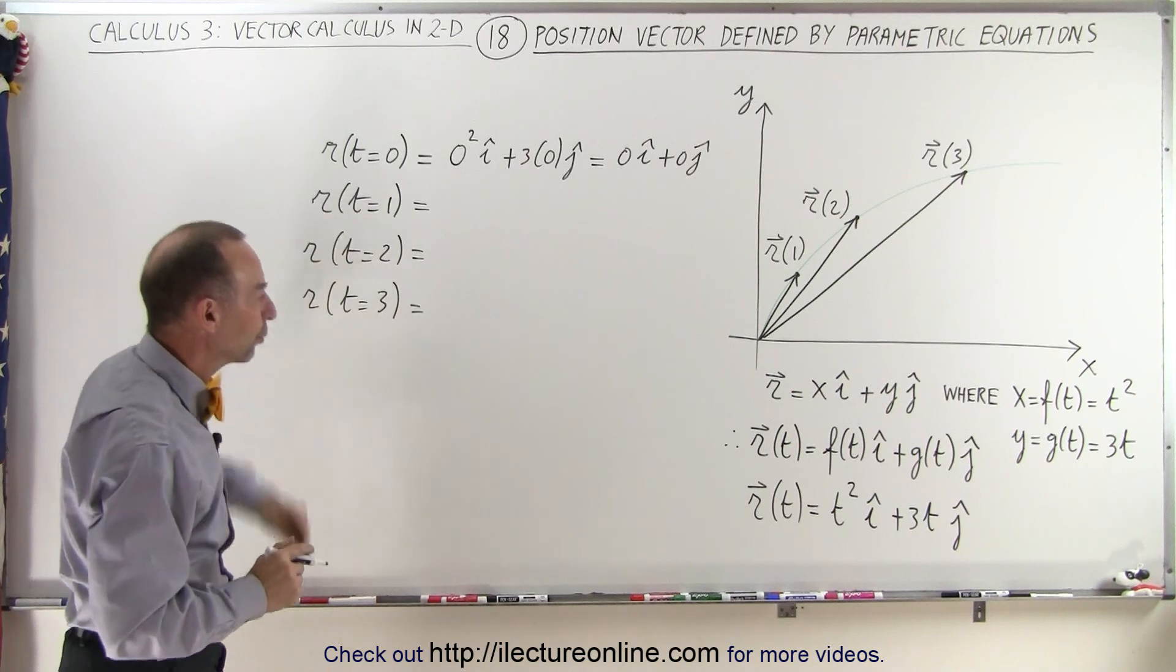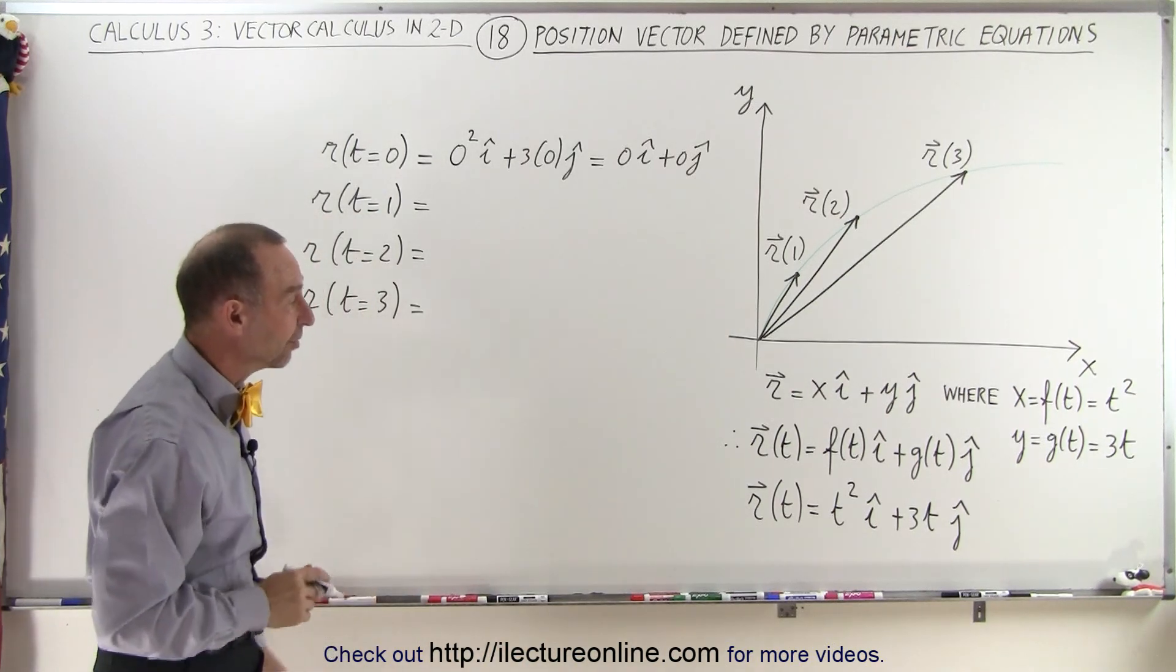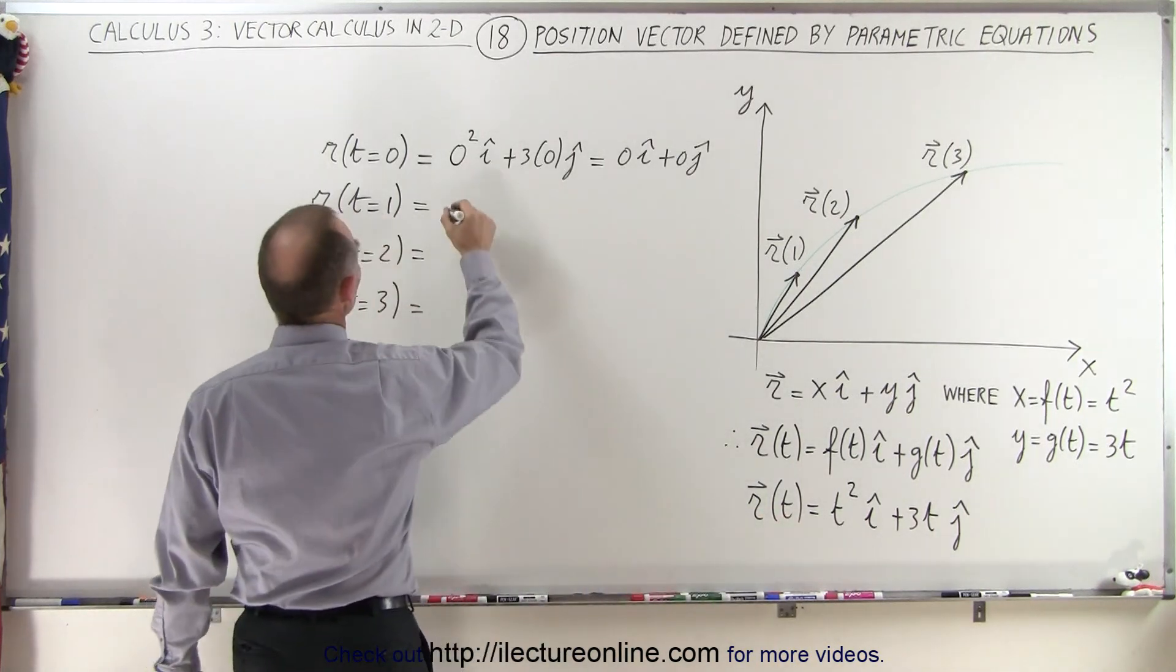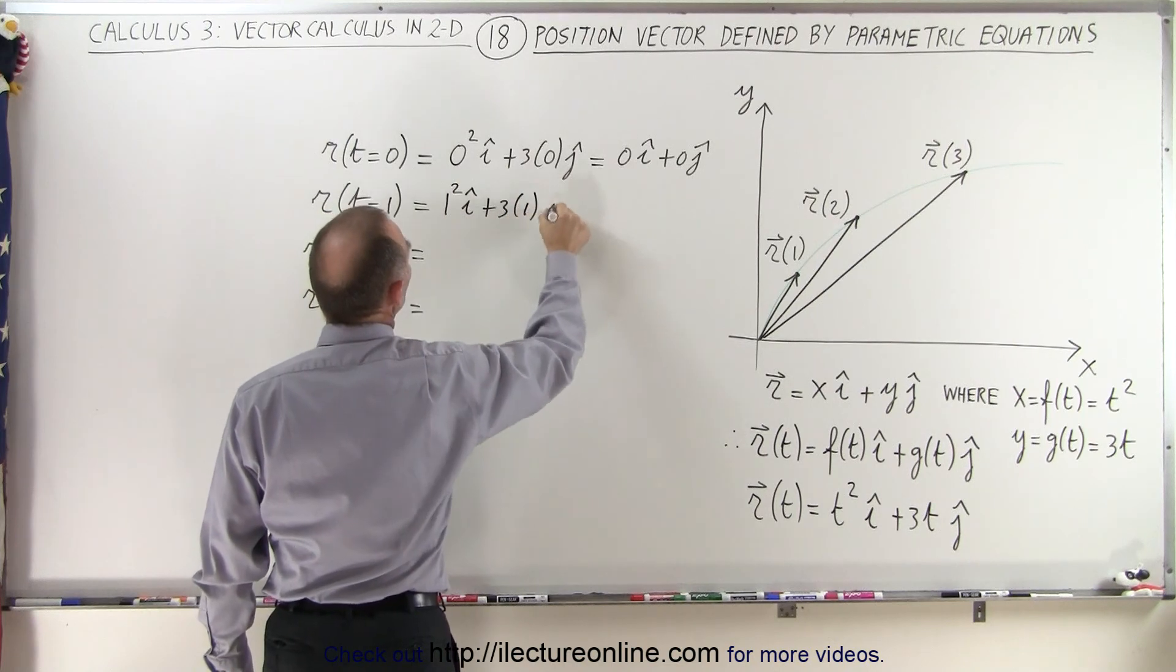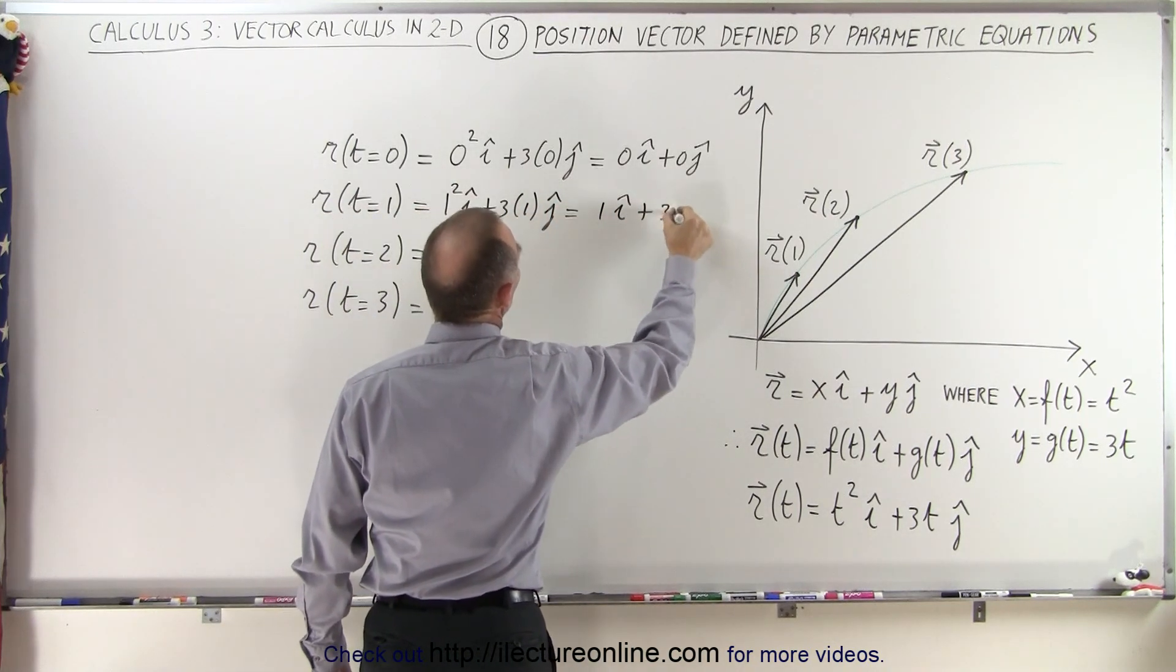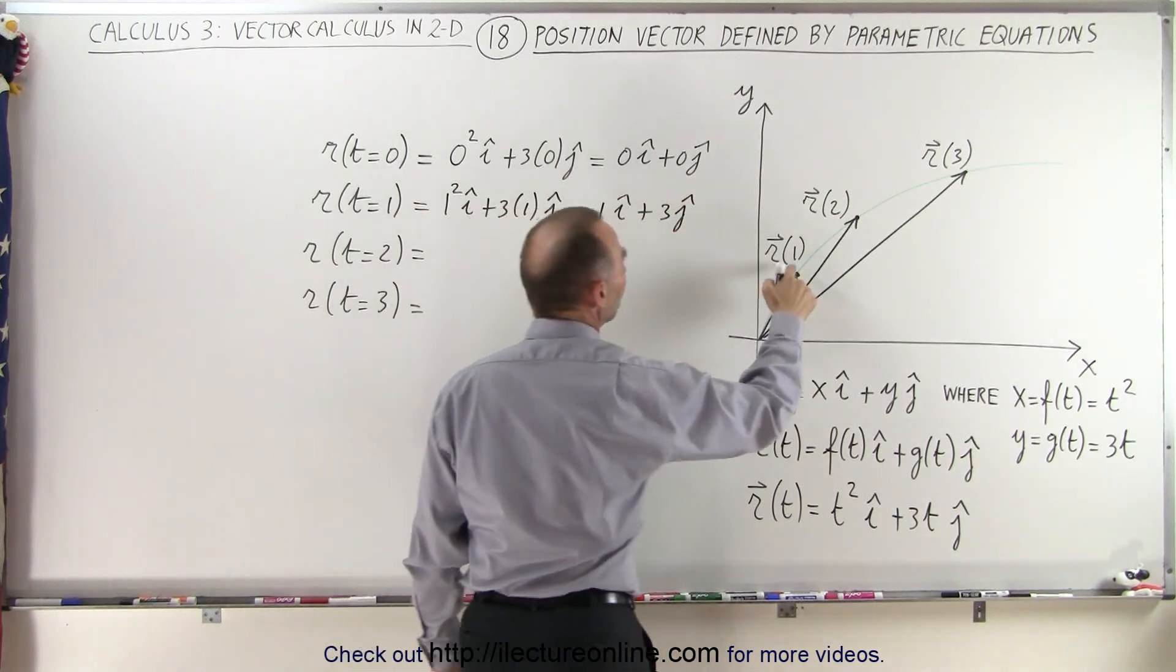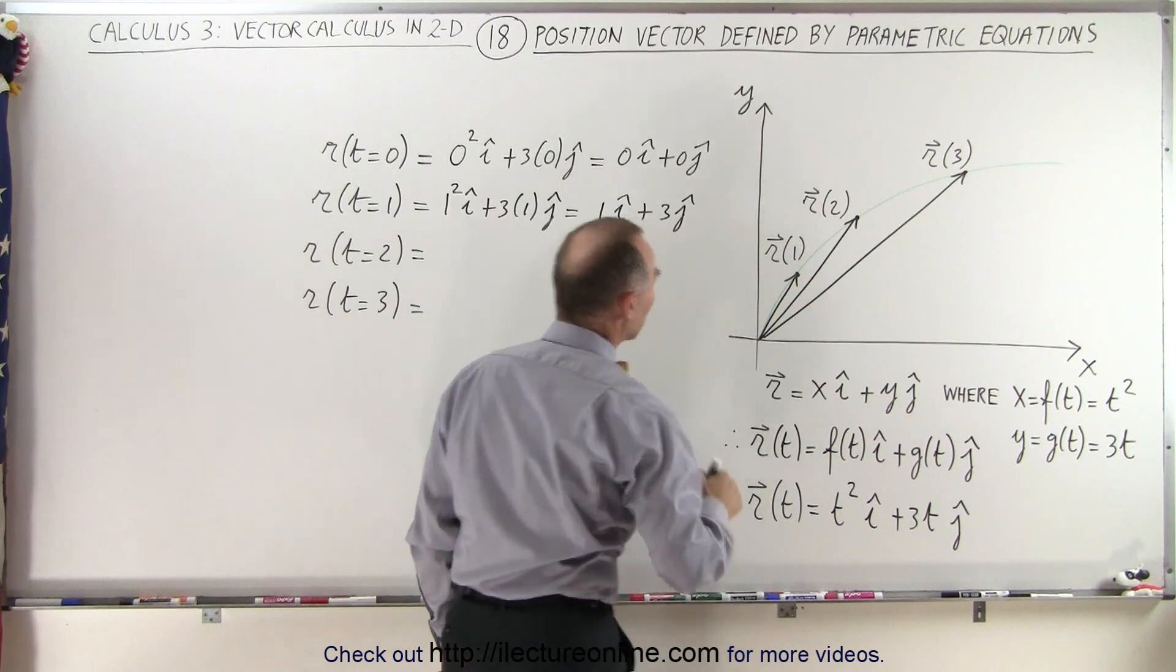Now when time equals 1, again, assuming that our parametric variable represents time, so now we plug in 1 here, so we get 1 squared in the i direction plus 3 times 1 in the j direction. So that's going to be 1i plus 3j. So when time is equal to 1, our particle will now be at that particular location.